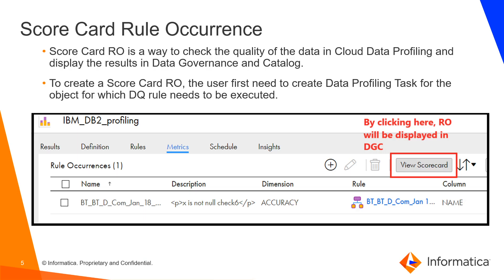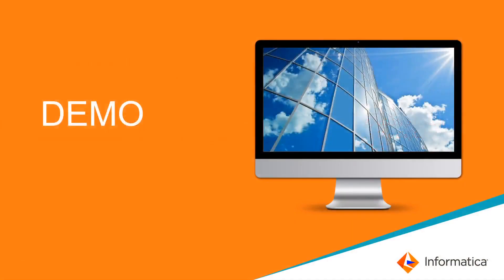Now let's see how to create scorecard rule occurrence in Cloud Data Profiling. To create a scorecard rule occurrence, the user first needs to create a data profiling task for the object. On top of the data profiling task, a scorecard rule occurrence can be created. Now we can see how to create a scorecard rule occurrence in CDP and display it in CDGC.